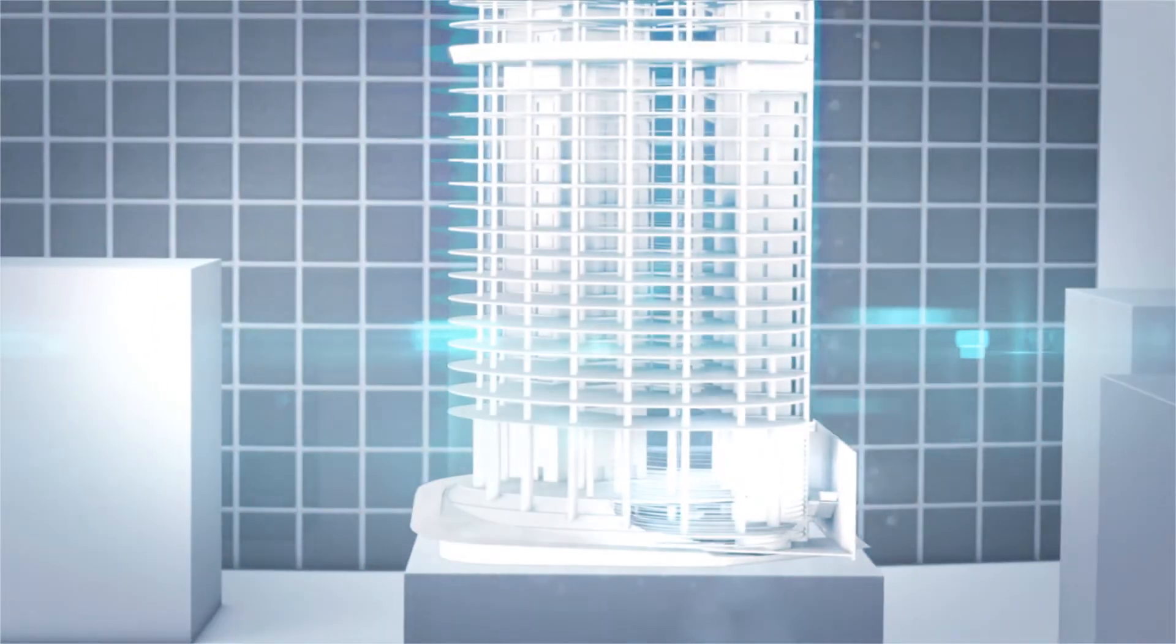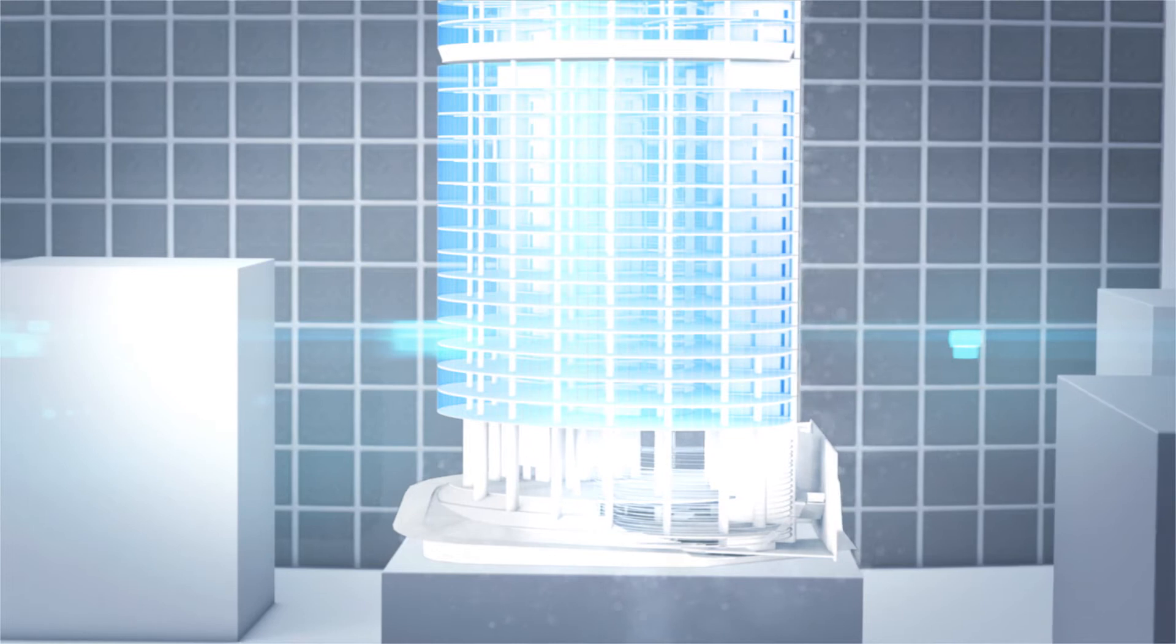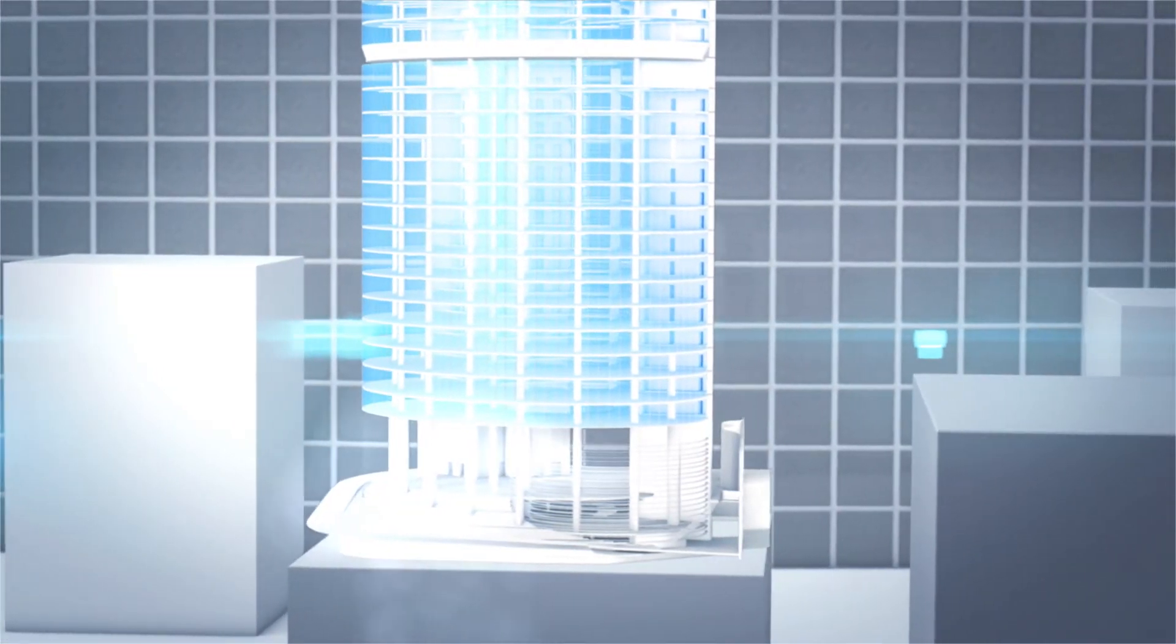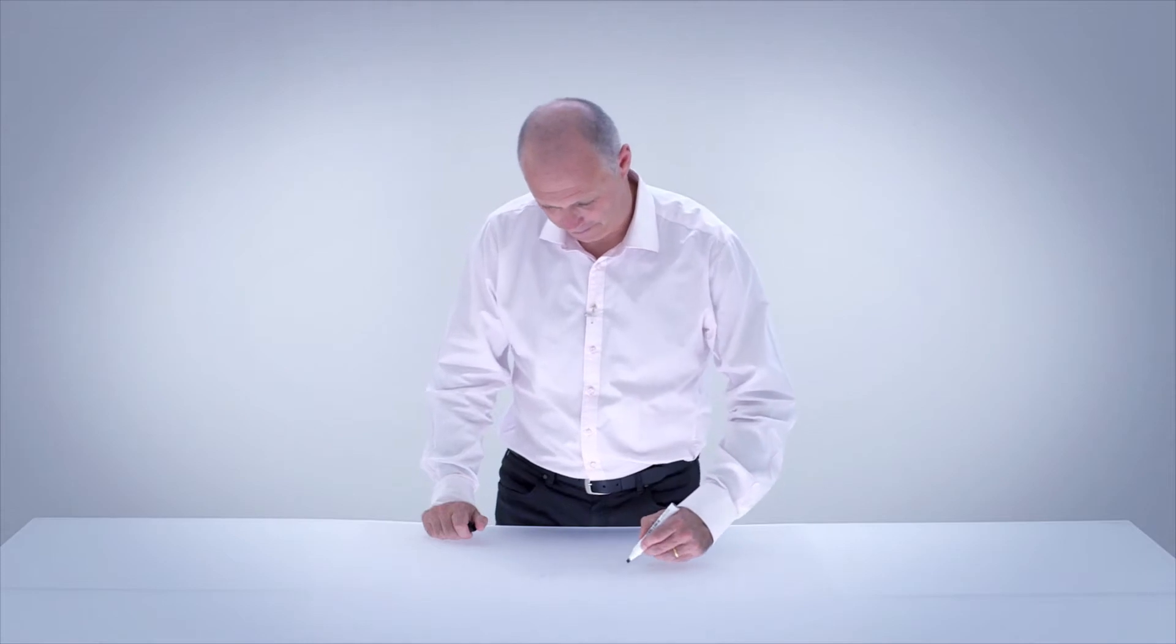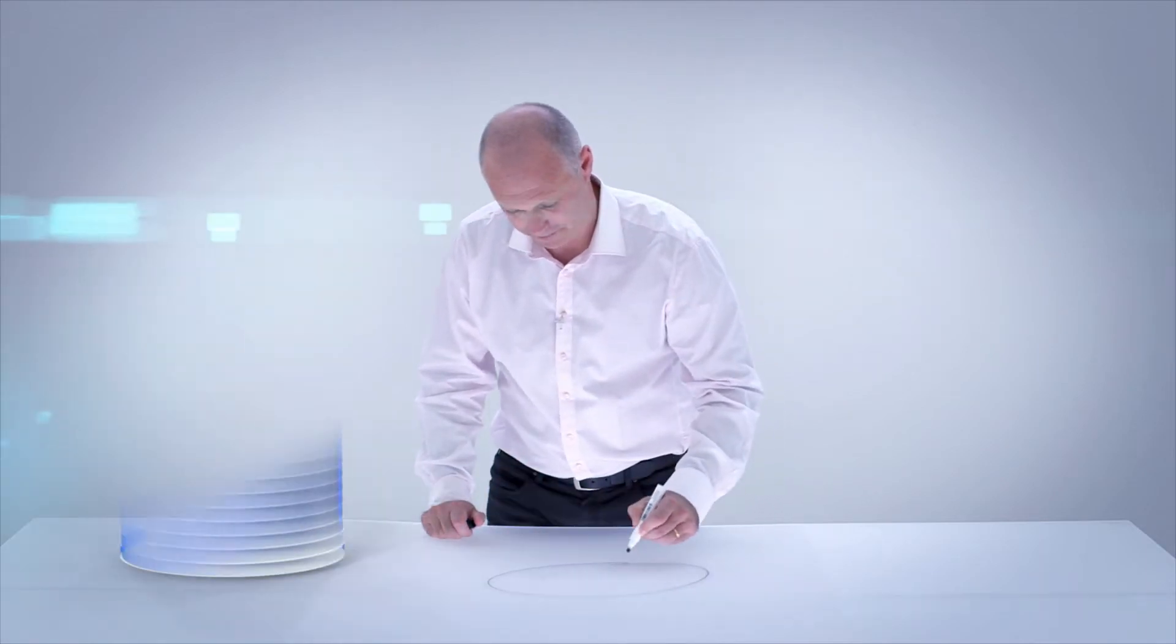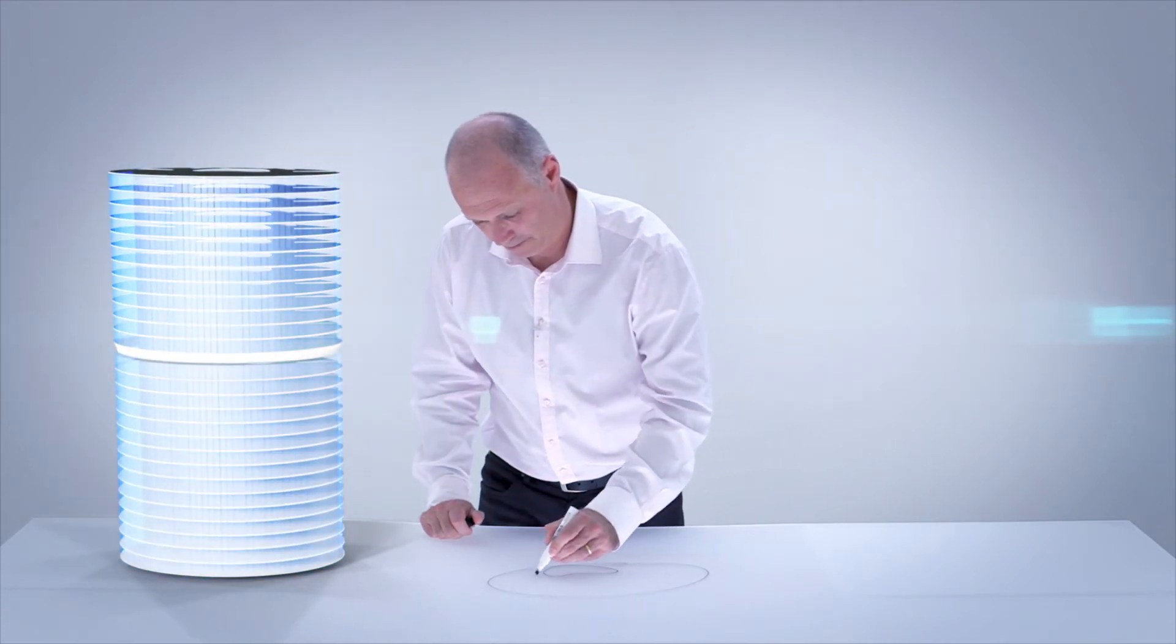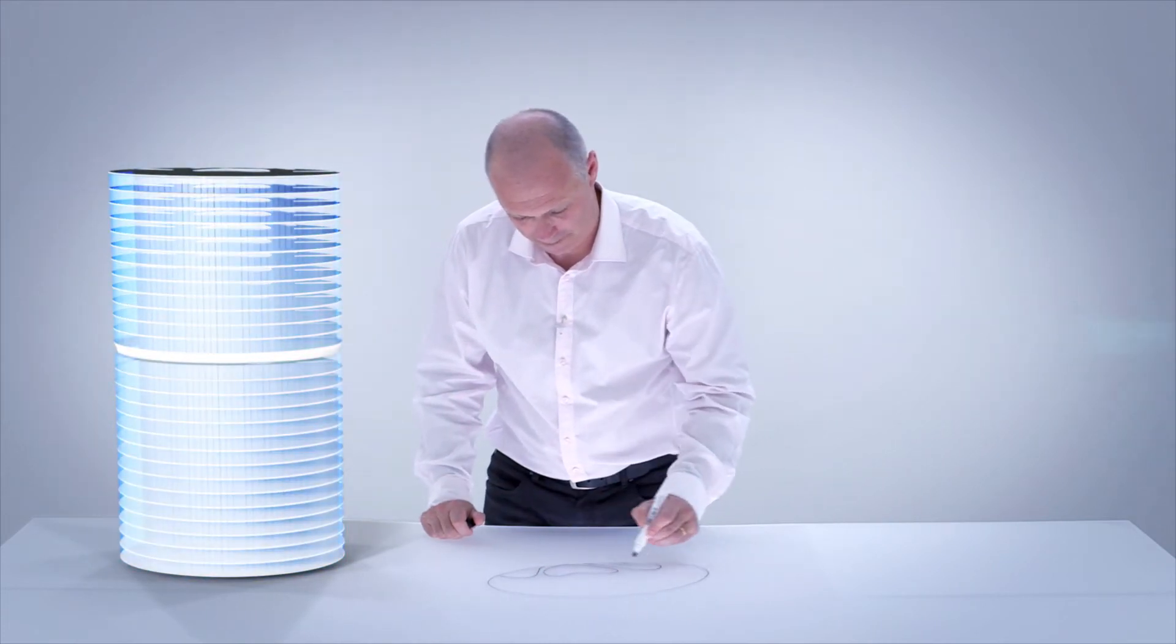So 1 Bligh Street's a commercial office tower in Sydney. It's Australia's first double skinned building and also probably the first warm climate double skinned. The outcome of it is a facade system that is super efficient. It only lets in about 10% of the solar gain in summertime.